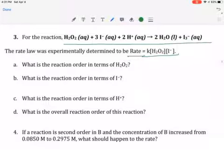So we're going to look and respond to letter A. The reaction order in terms of hydrogen peroxide is going to be first order. We know that because the exponent to which hydrogen peroxide is raised is 1.